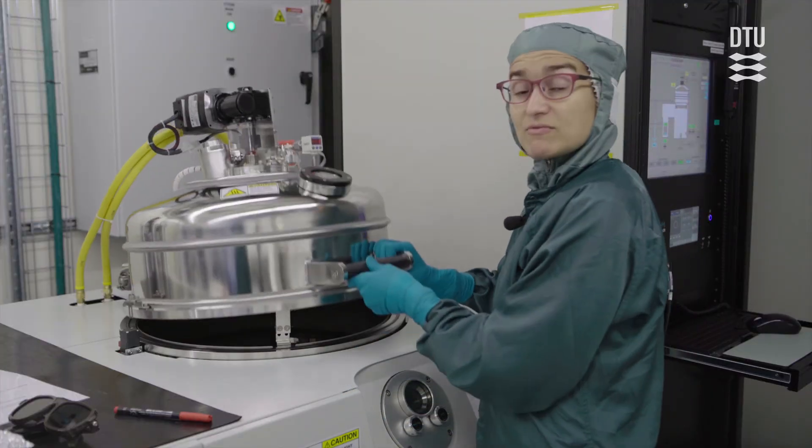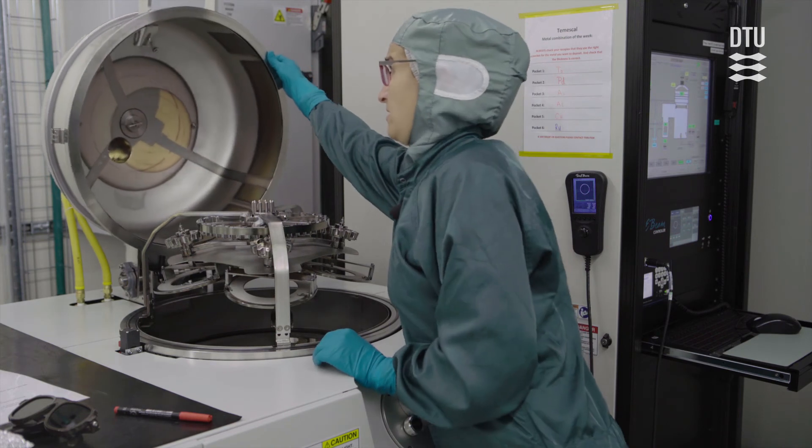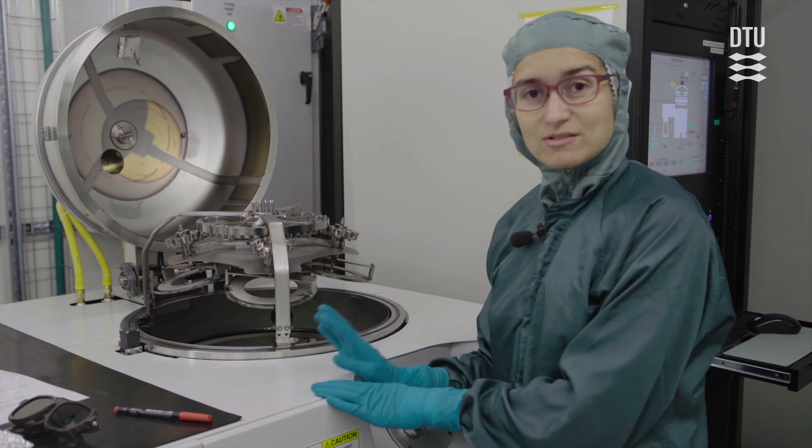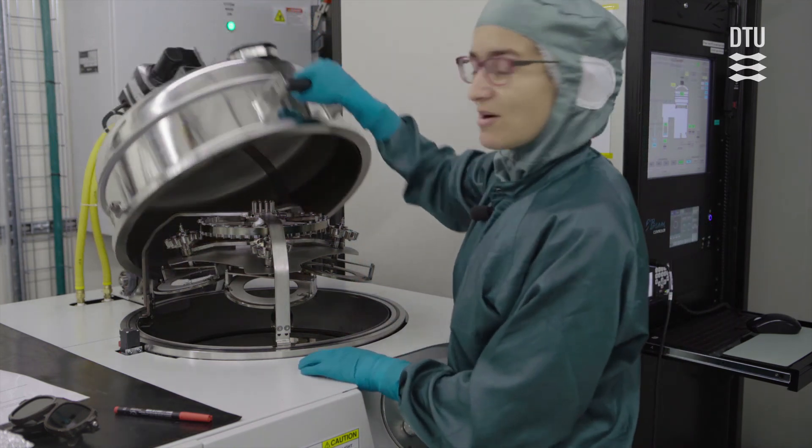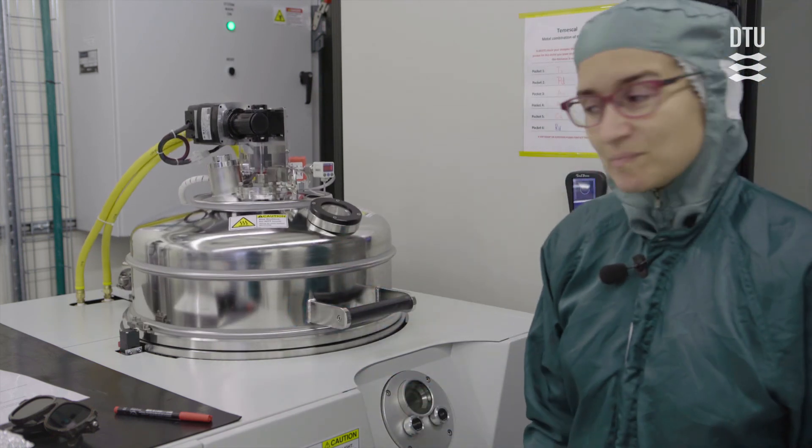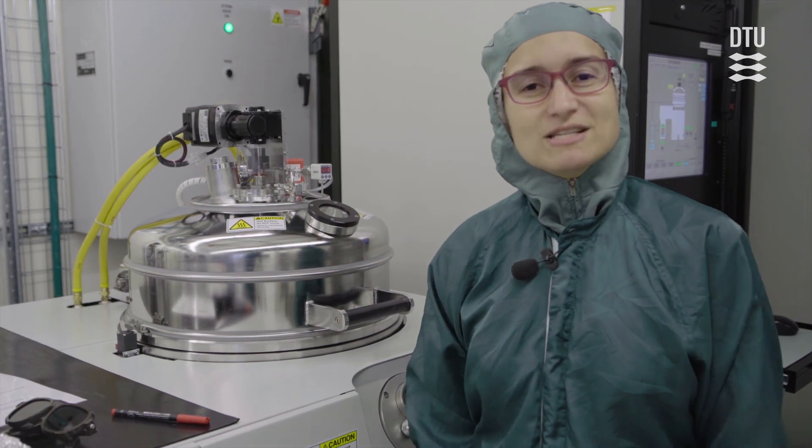So once the system is vented after the deposition, you can just open the load lock, take out your samples, and remember to pump down the system once you're done. Close it up again of course and start pumping in the auto menu. And also please remember to fill out the process log and the load lock.